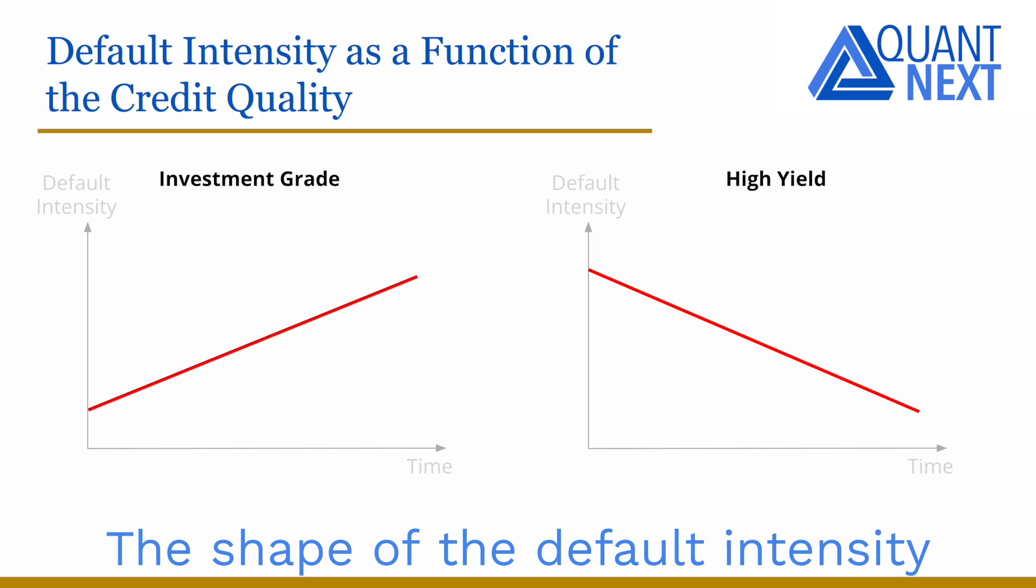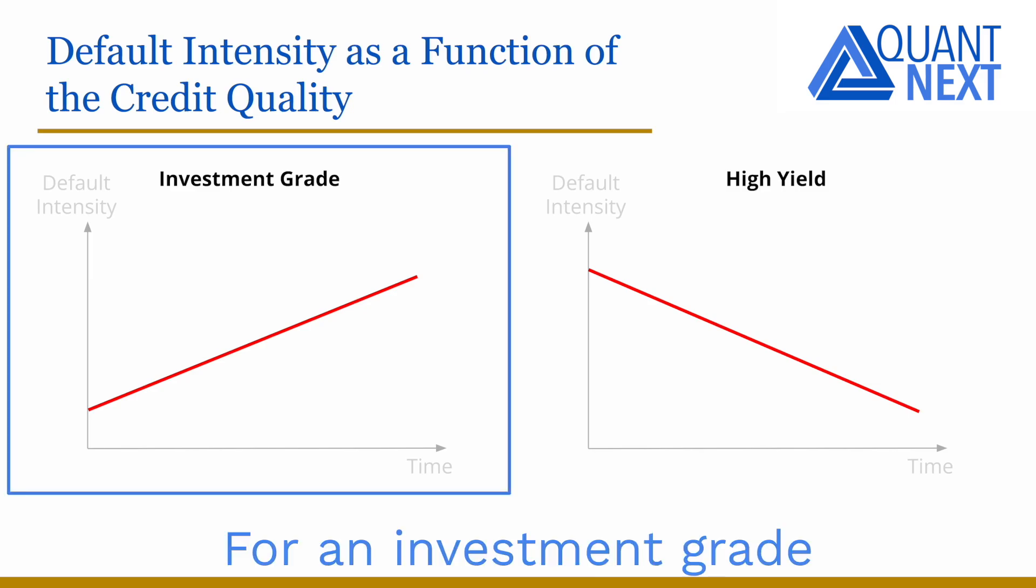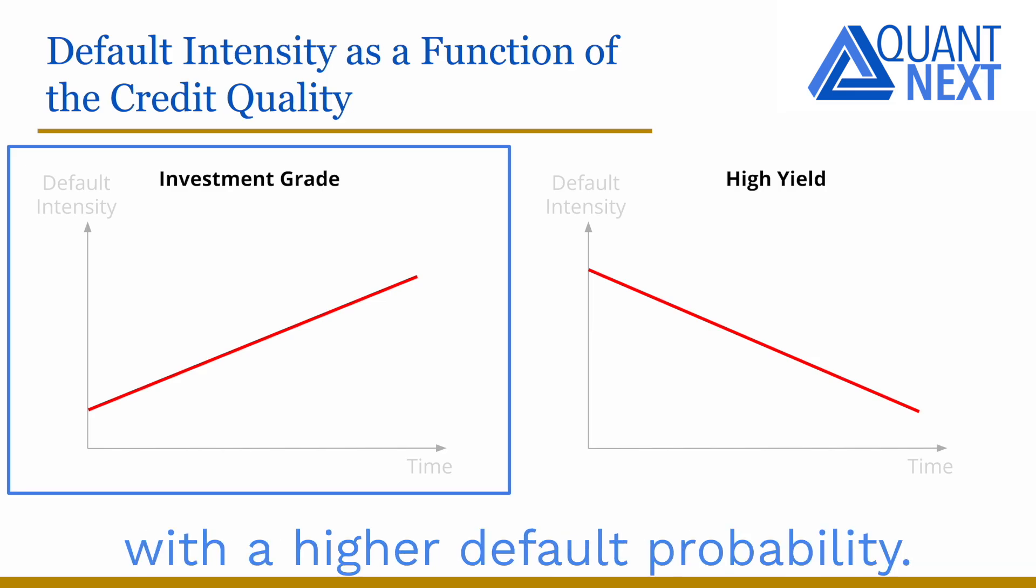The shape of the default intensity as a function of time depends on the credit quality of the borrower. For an investment grade good quality name, we typically observe a growing curve. Even if the borrower has a low default probability, there are risks that its credit worthiness deteriorates in the future with a higher default probability.